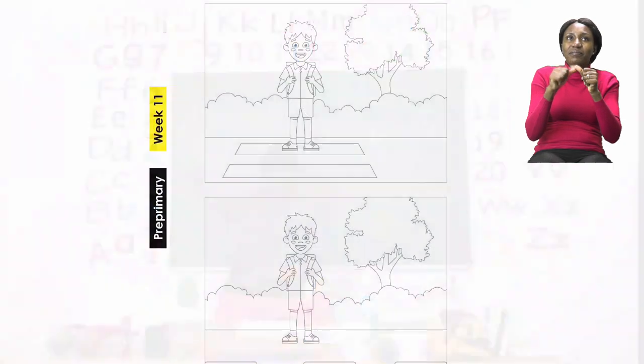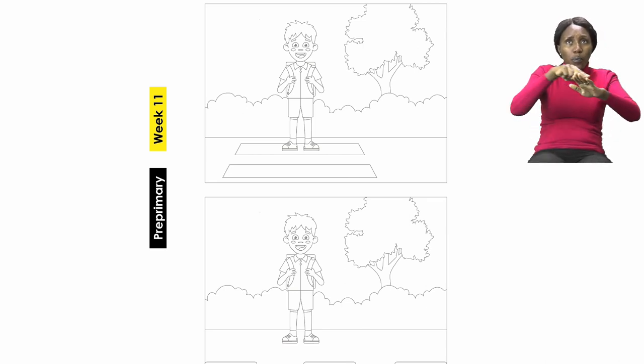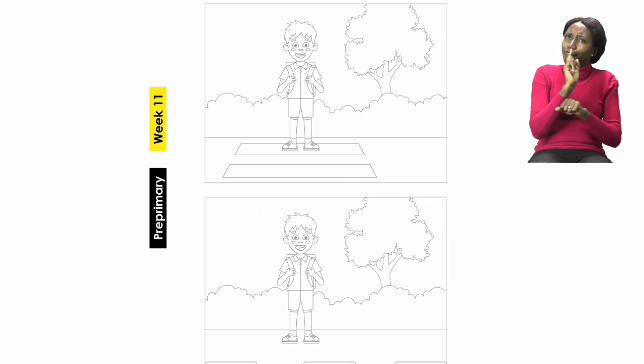Page 4. On page 4 we are talking about the rules of the road. This is the first rule that we're going to be talking about. It is the one that tells us where we are allowed to cross the road.